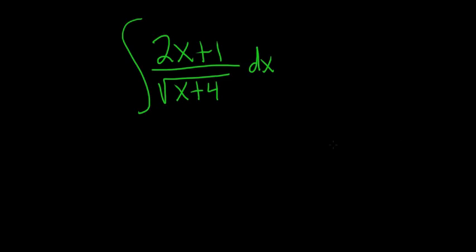We have the indefinite integral of 2x plus 1 over the square root of x plus 4. So in a problem like this, the natural thing to try is a u substitution.